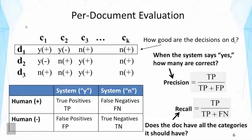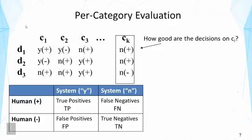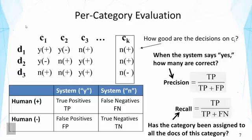This per-document view gives a detailed perspective, and we can aggregate later. If we're interested in particular documents — for example, a subset of long versus short documents — this allows us to analyze errors in more detail and find patterns that give insight for improvement. Similarly, we can look at per-category evaluation: how good are the decisions on a particular category? Precision and recall answer the questions from a different perspective. Precision checks if all documents assigned to this category are indeed in it, and recall checks whether the category has been assigned to all documents that should have it.